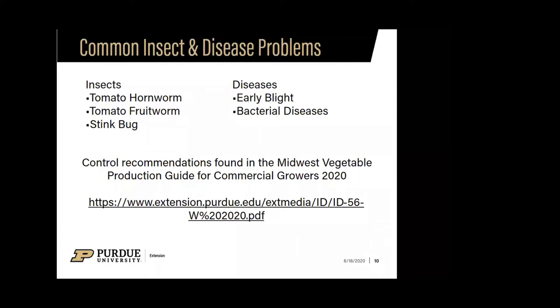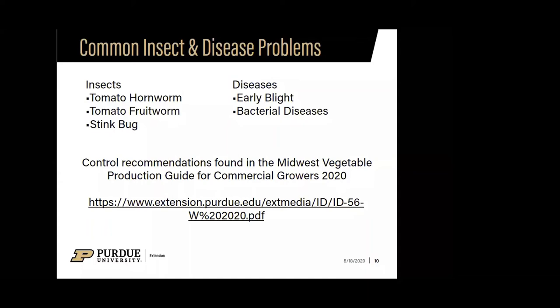We're really starting to see a lot of bacterial diseases on the rise and fewer of those issues from the past. We'll talk about identification and causes of many diseases today. For control recommendations, I'll refer you to the Midwest Vegetable Production Guide for Commercial Growers — a colleague will share that link in the chat box. It has weed, disease, and insect control recommendations and is free.